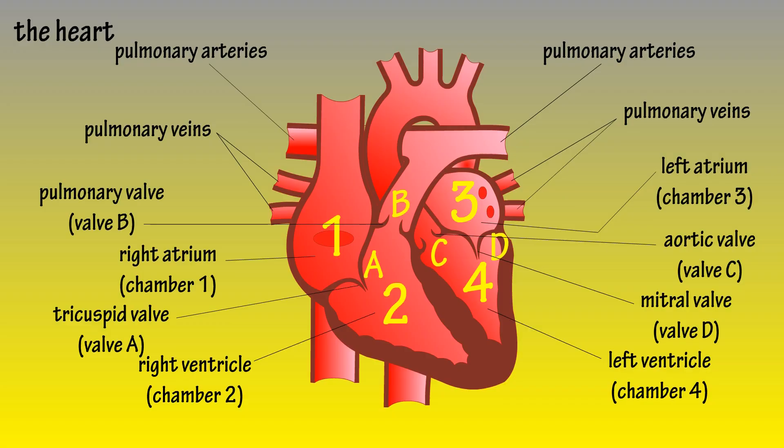One note here: the arteries and veins just mentioned are kind of backwards in that everywhere else in the body, arteries carry oxygenated blood and veins carry deoxygenated blood. The pulmonary veins and arteries are the only exception.